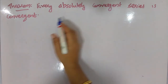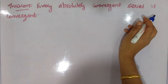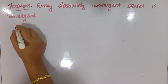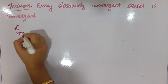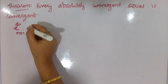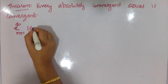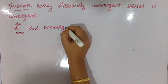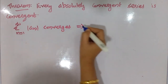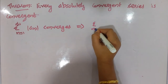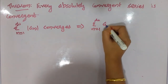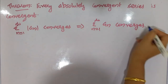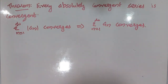Every absolutely convergent series is convergent. In this case, sigma n equals 1 to infinity of mod a_n converges implies sigma n equals 1 to infinity of a_n converges. Now we will try to prove it.